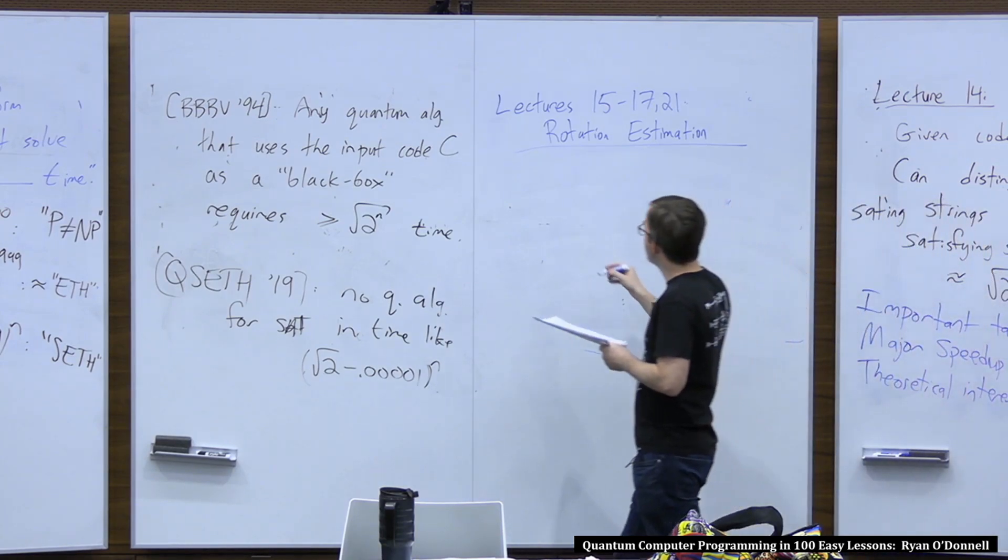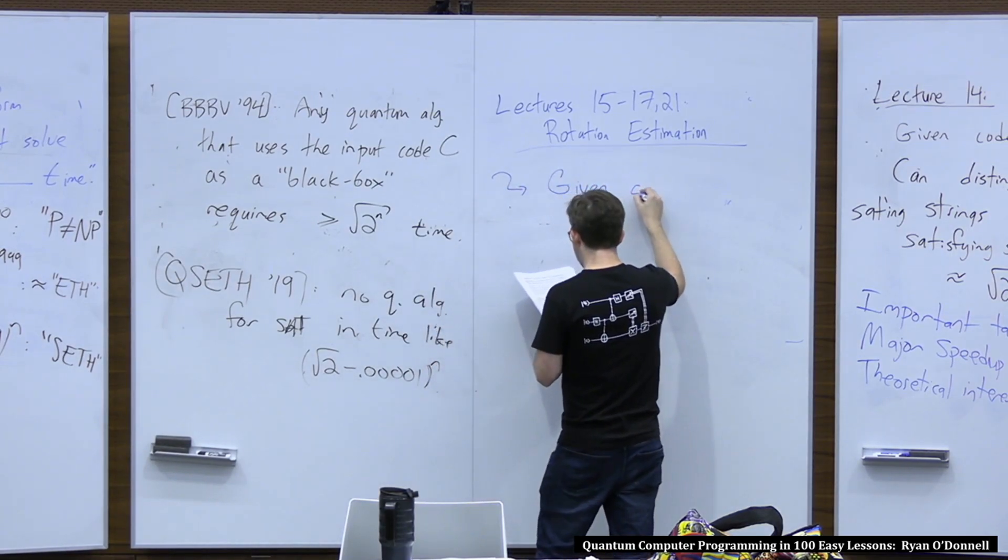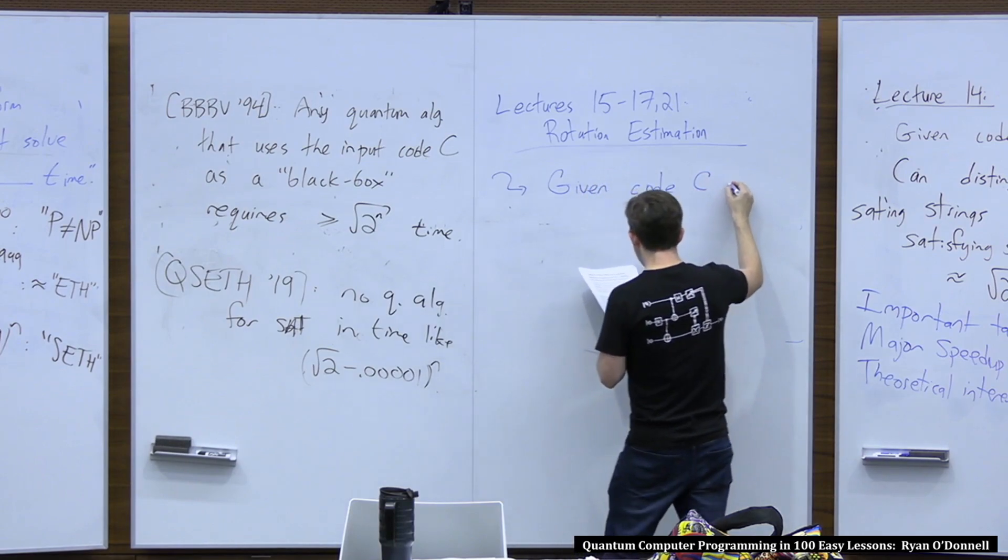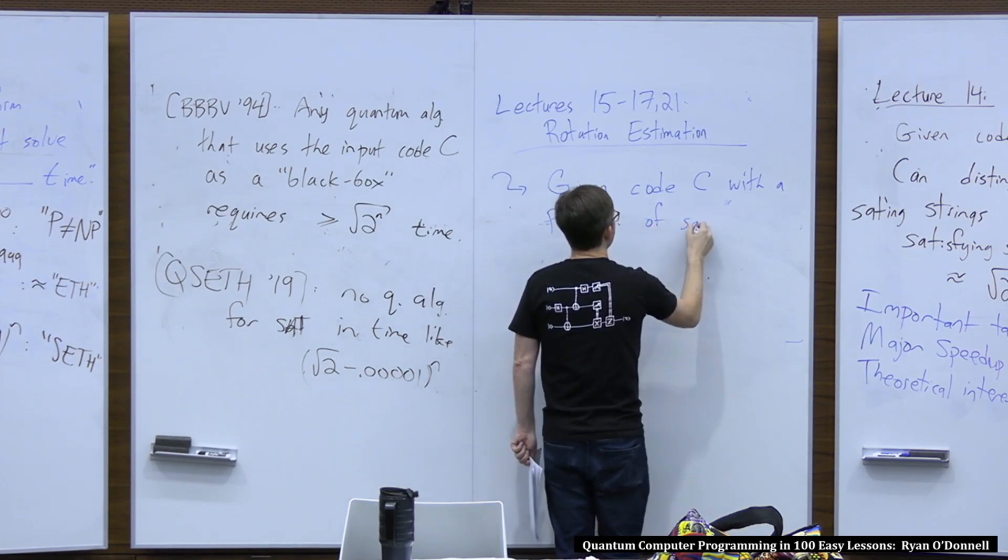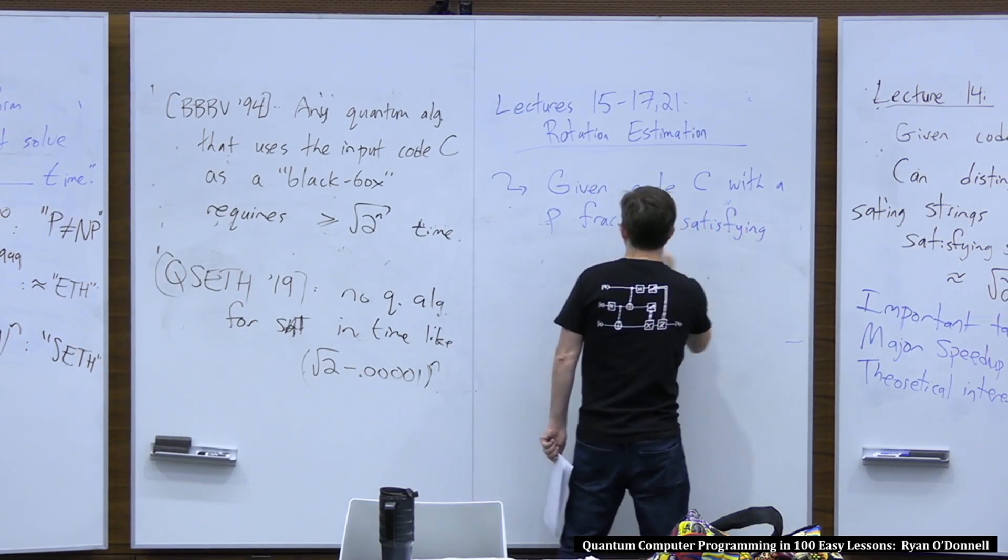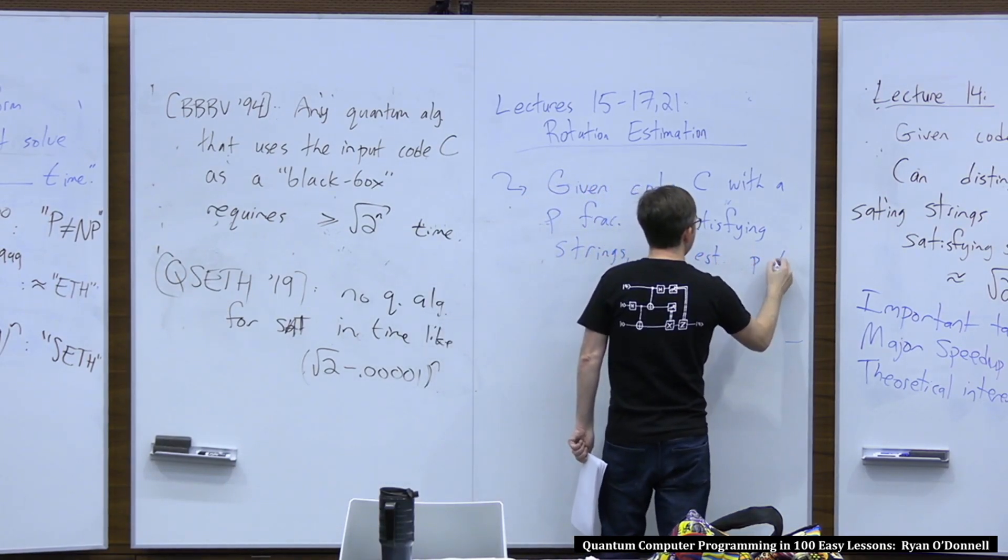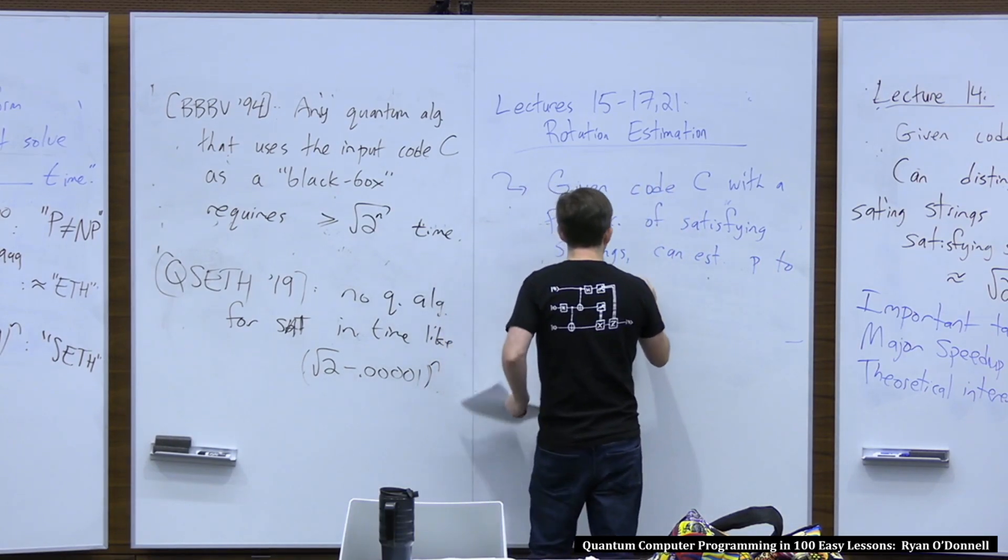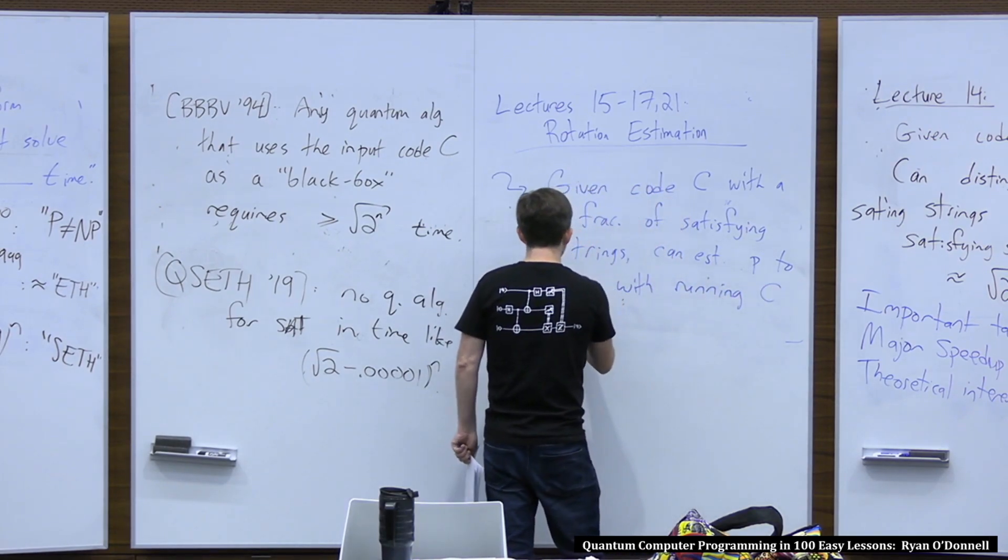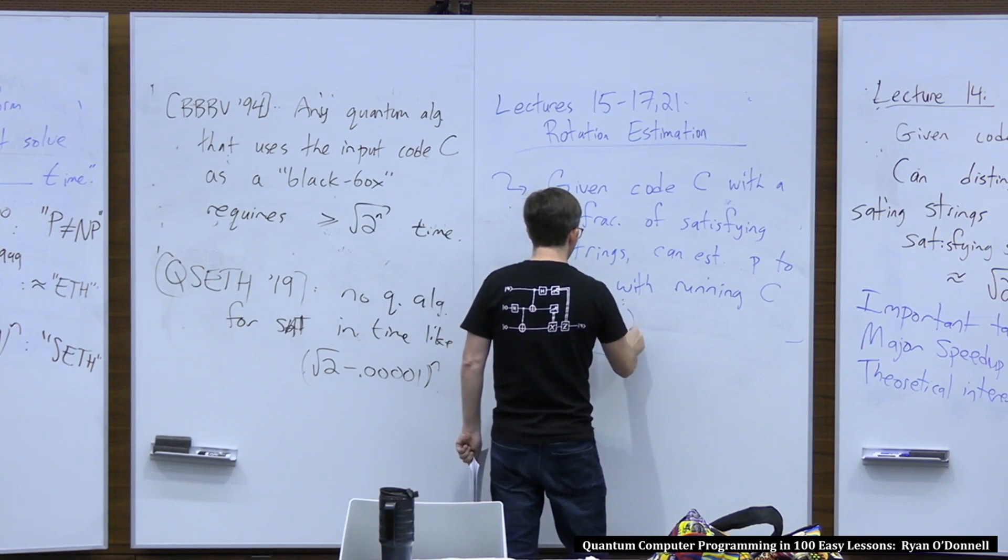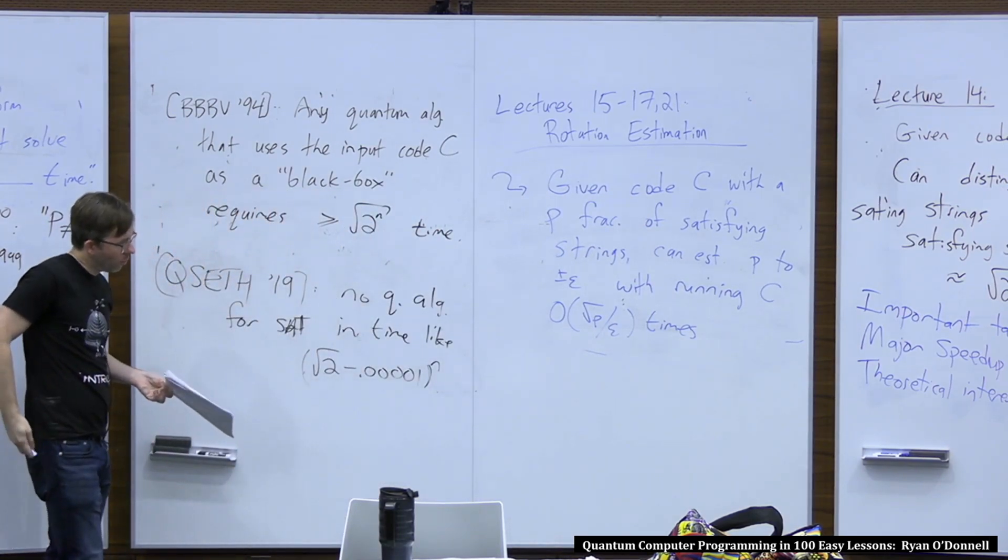And among other things, you can do it to get like a sort of super Grover, the ultimate form of Grover, which is given code C with a P fraction of satisfying strings, you can estimate P to plus or minus epsilon with running the code C something like square root P divided by epsilon many times.